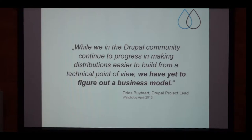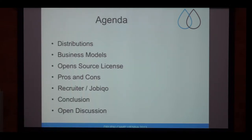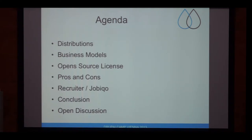How can companies that invest a lot into implementing, publishing and maintaining a distribution make any profit out of it? Let's take a look at the agenda. I'm starting with a few words on distributions, followed by business models, some licensing issues, pros and cons. Afterwards I'll demonstrate how we at EpiCo approach this with our open source recruiter distribution and our commercial variant, Jopico. At the end there should be enough time for an open discussion.